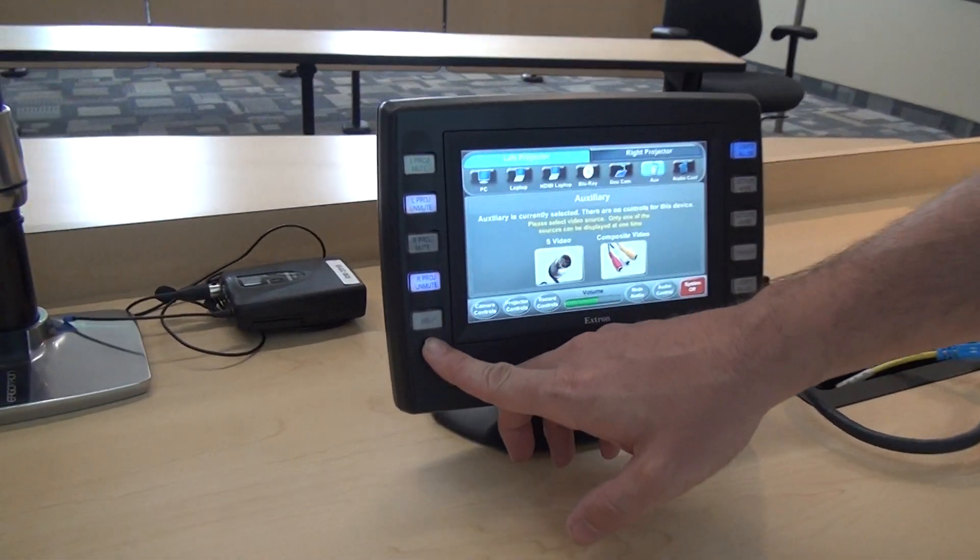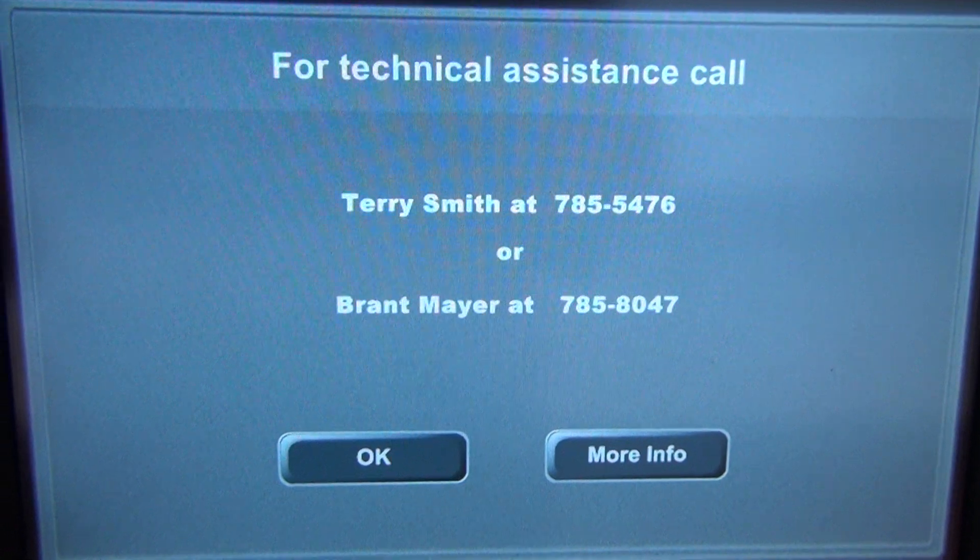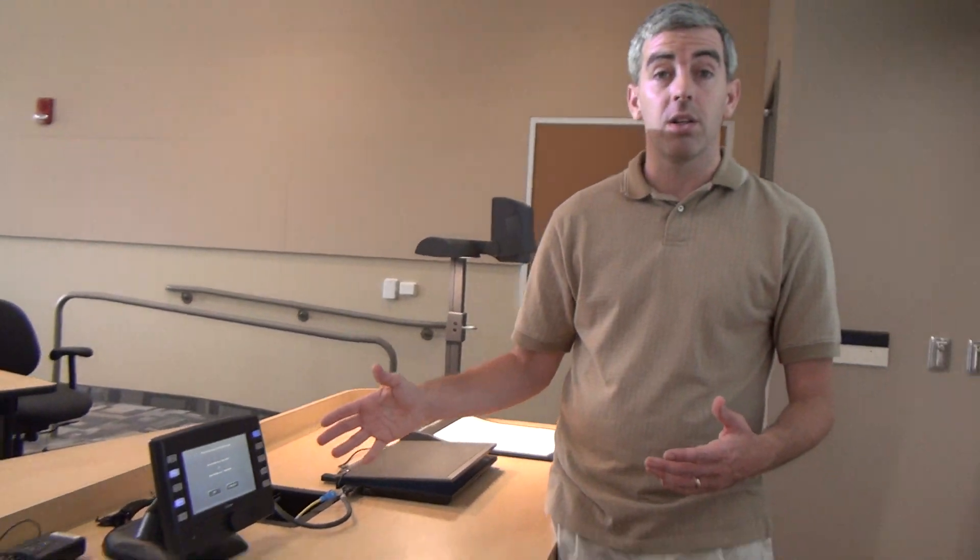The last button here on our list is the help button. It's an important button because when I hit help it brings up the names and phone numbers of a couple members of our academic technology staff. If you ever need help during a class these are the numbers that you would call to get somebody to assist you as soon as possible. This is also a good place to look for the numbers if you ever needed help with anything else pertaining to the classroom technology.